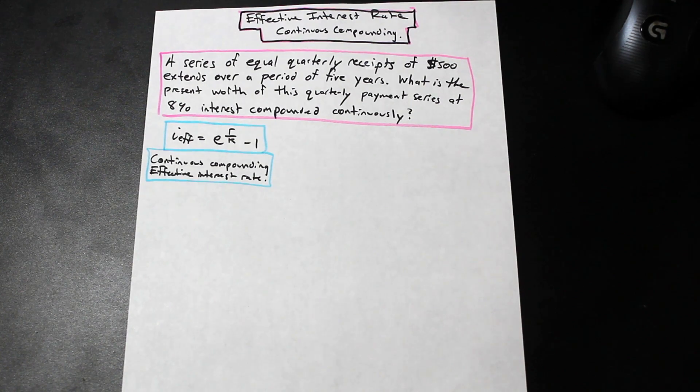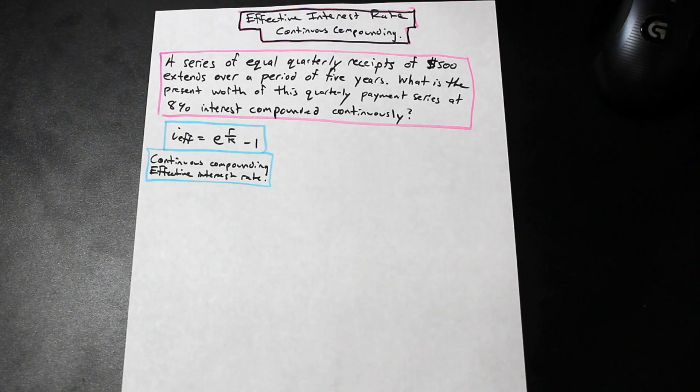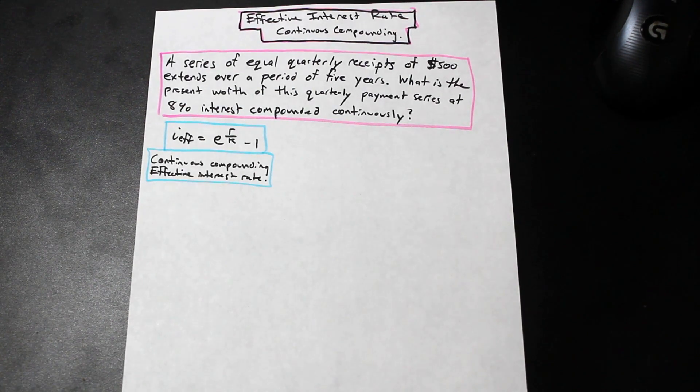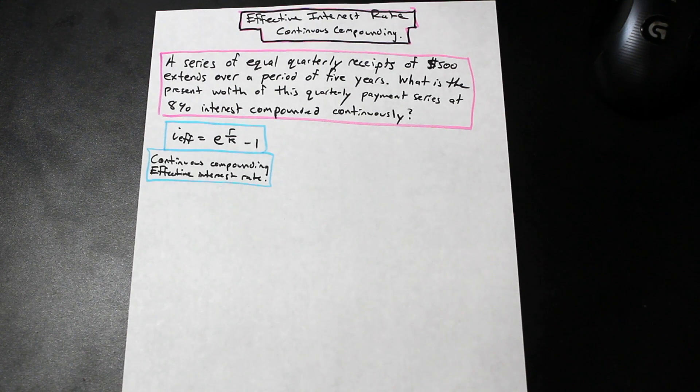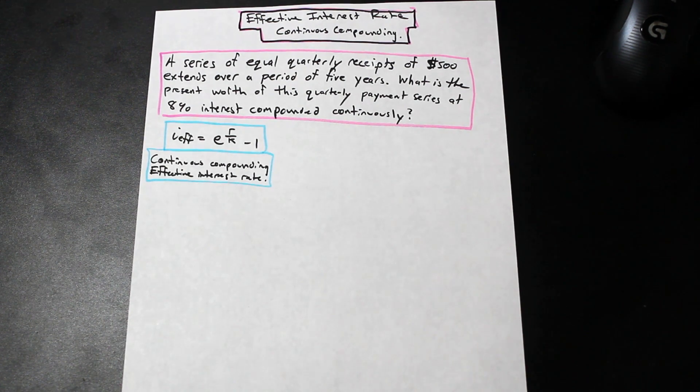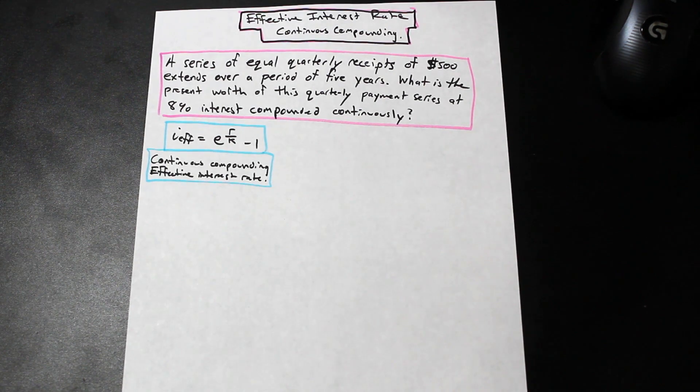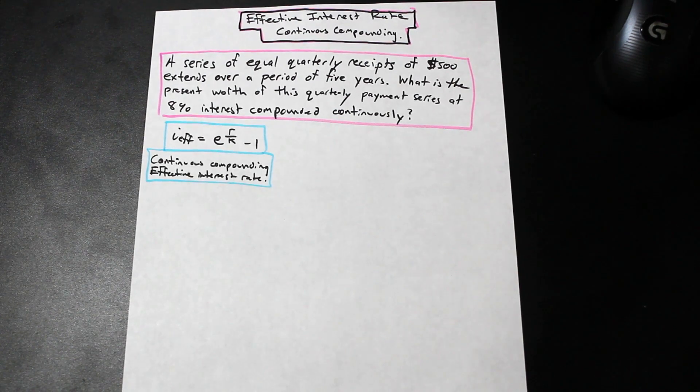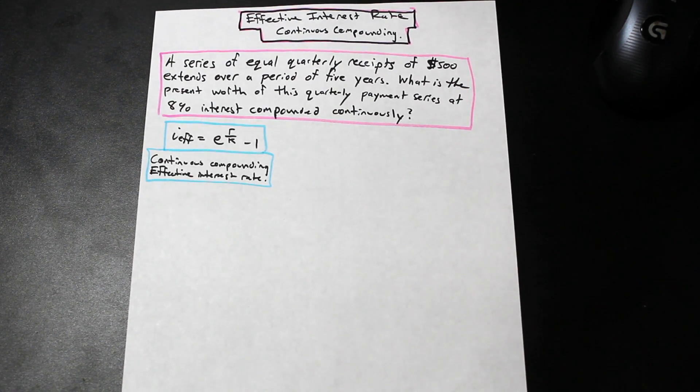So continuous compounding is more of like a mathematical principle. Essentially what it is is the time period of the compounding is infinitely small so it's like continuously compounding over time, which is really good if you're the one receiving continuous compounding interest. For example, instead of the interest rate being compounded quarterly or monthly or yearly, it's compounded continuously on an infinitely small time frame. It's more of a mathematical concept than something you can really visualize, but it is important in economics and it's fairly simple too.